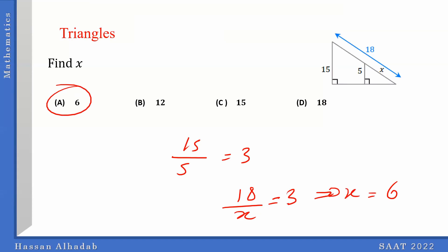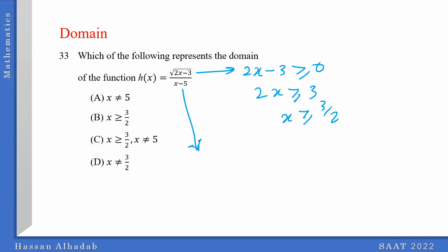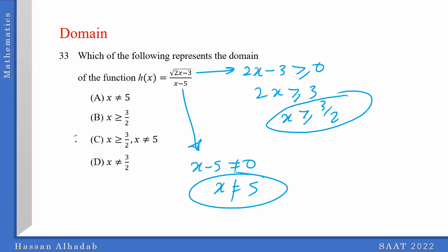Any question about this one? Here we go, so domain. The idea is for square root, what's underneath the square root can't be negative, so it has to be greater than or equal to 0. That means 2x is greater than or equal to 3, that means x is greater than or equal to 3 over 2. So this is one condition. The second condition: x minus 5 can't be 0, so x cannot equal 5. So the answer is C.